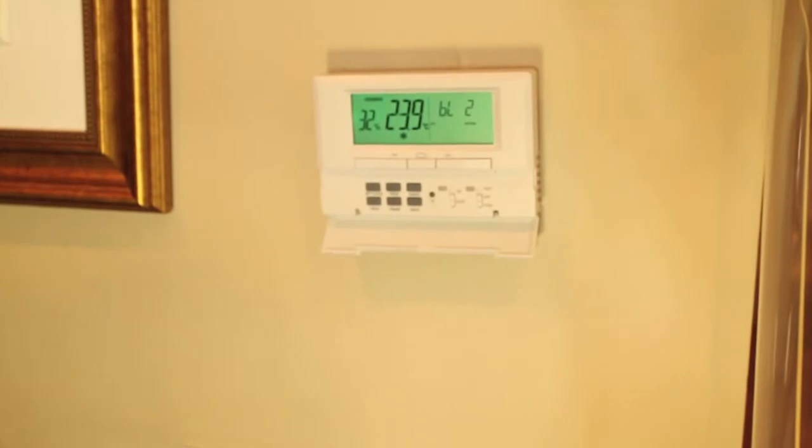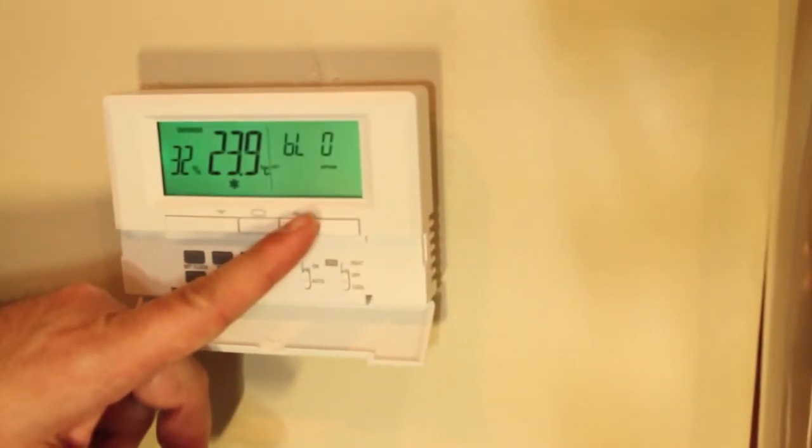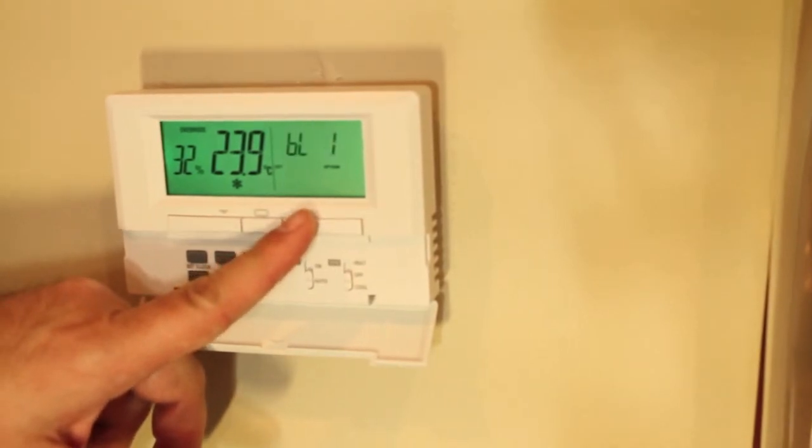You might have noticed this thermostat comes equipped with a backlight. This backlight can be turned off at BL setting 0 or for different durations at BL 1 and BL 2.